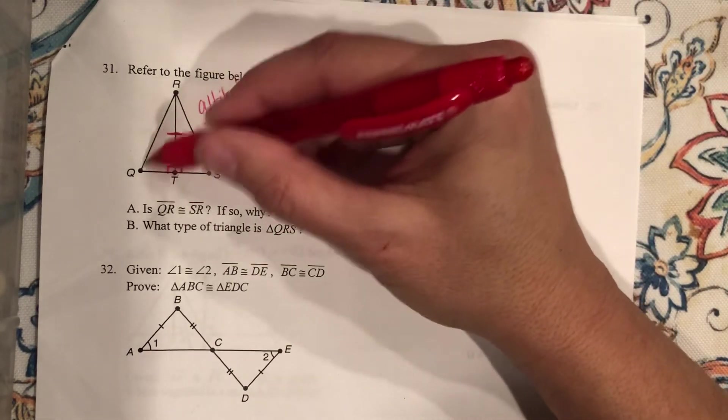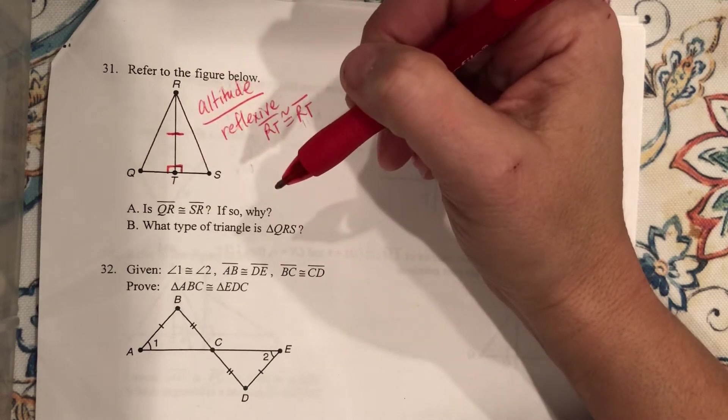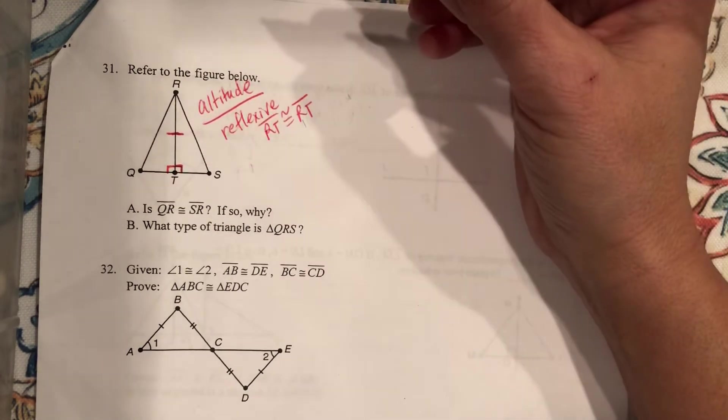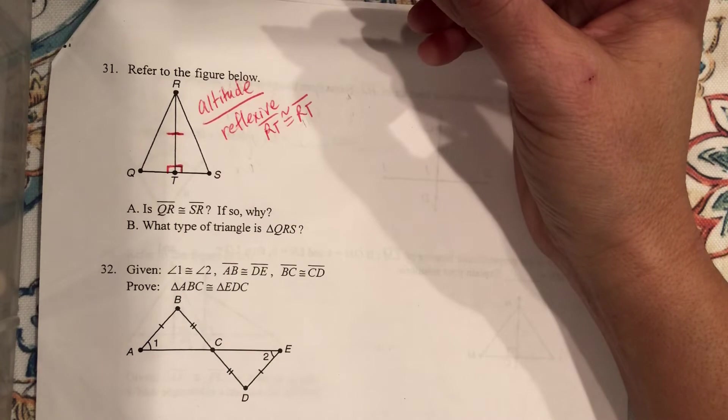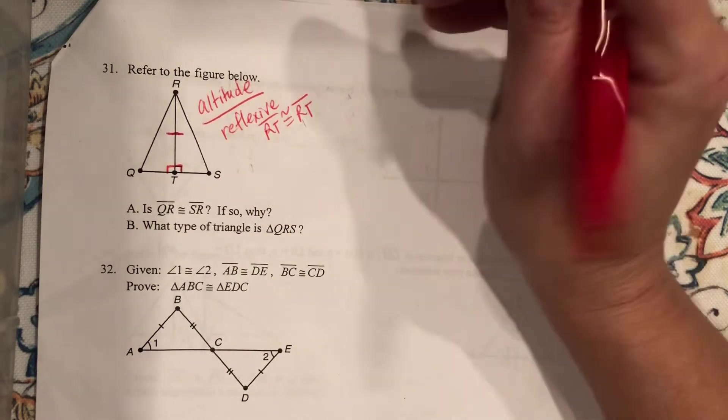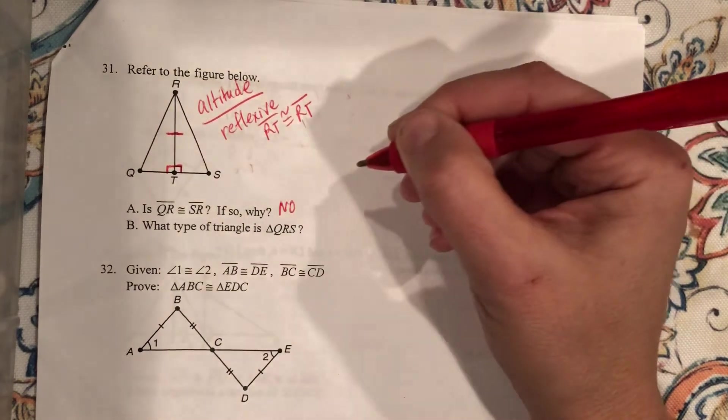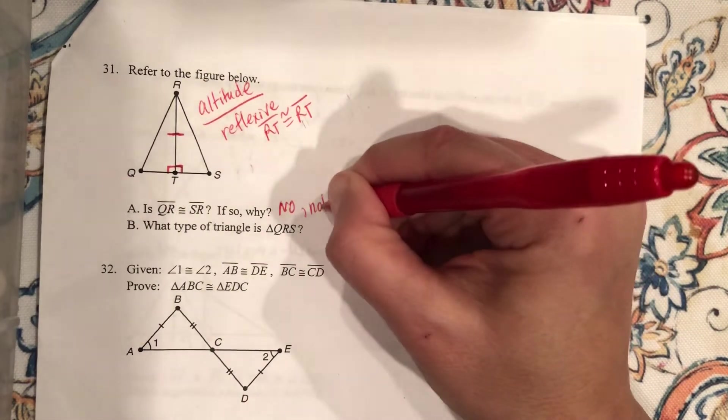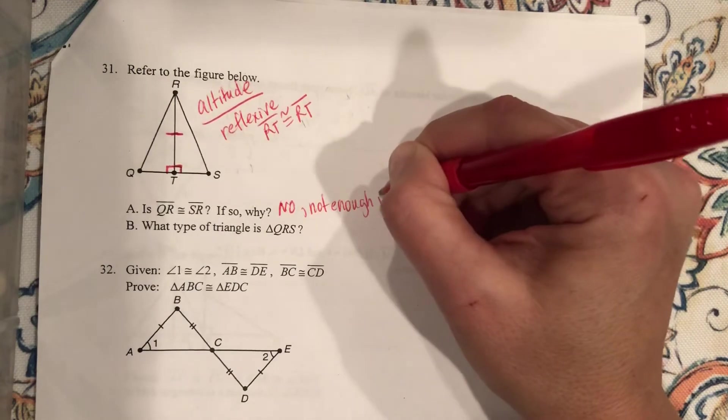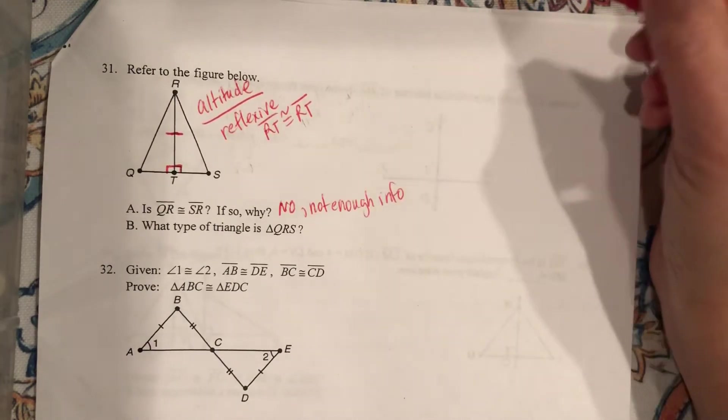A lot of people would say, oh, yeah, QR and SR are the same. How would you know that? How would you know that? You don't know that. Okay. The answer is no. There's not enough information. You don't have enough info.